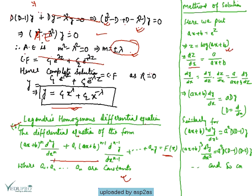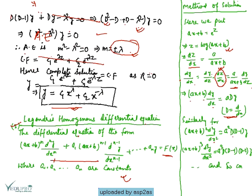Then dz/dx = a/(ax + b), and dy/dx = (dy/dz)(dz/dx) = a/(ax+b) · dy/dz. So (ax+b) dy/dx = a·Dy, and (ax+b)² d²y/dx² = a² D(D−1)y, and so on.